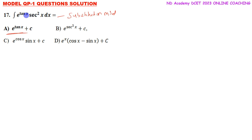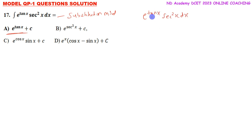In the substitution method, we identify the function and its derivative next to it. Here, the derivative of tan x is sec squared x. So we use the substitution method. The question is: integration of e to the power of tan x times sec squared x dx. We let tan x equal to t.